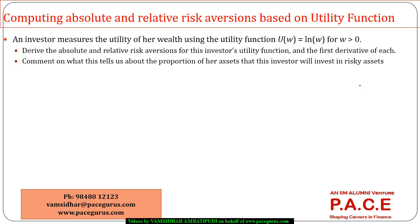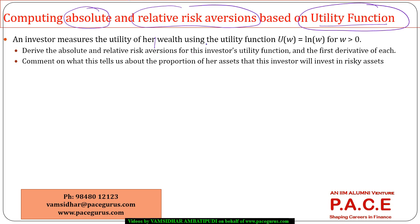Let's look at how to compute the absolute risk aversion and relative risk aversion based on a utility function. I am primarily looking at the utility function being a log function — u of w equals log w. This is the utility function of the investor, and from this I want to derive the absolute risk aversion as well as the relative risk aversion.